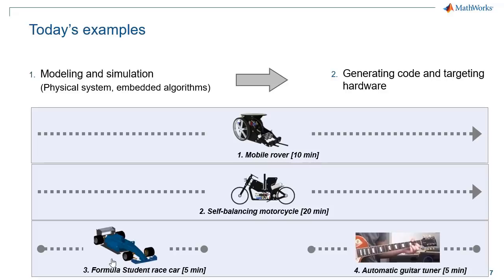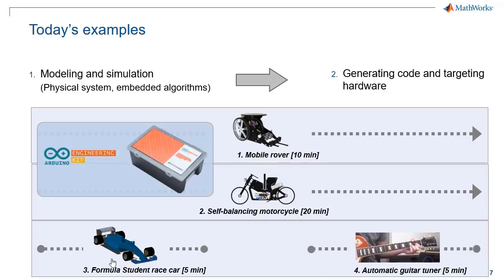Before we get into these demos, I just want to quickly mention that the rover and motorcycle projects are both included as part of the Arduino engineering kit, which was developed in partnership between Arduino and MathWorks. It includes the Arduino board and all of the hardware components that you need to build these two projects, as well as detailed learning materials that basically show you how to program them with MATLAB and Simulink. So if you want to work with these projects after today's session, all you need to do is buy a kit. All right, with that, let's get started.